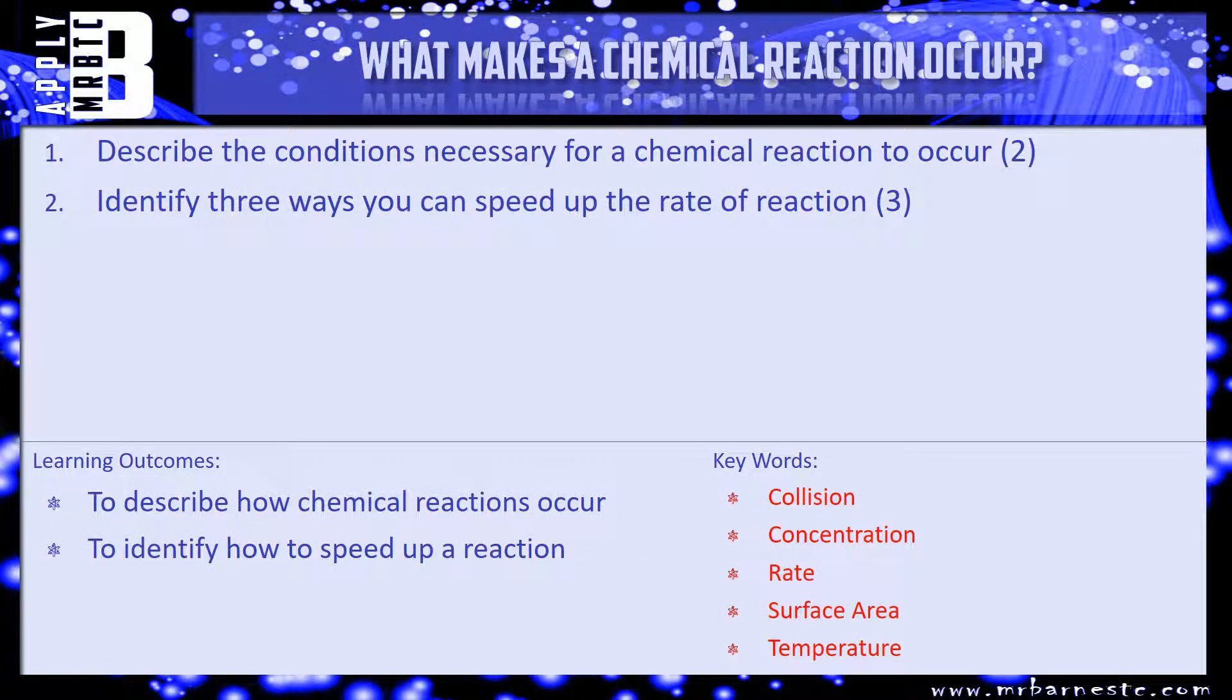Okay, I've got a couple of questions that I'd like you to have a look at. The first one being: describe the conditions necessary for a chemical reaction to occur. So it's two keywords I'm looking for from the video. And then number two: identify three ways you can speed up the rate of a reaction. Have a go at the questions and we'll see how you've done in a minute.